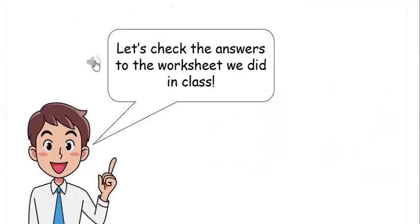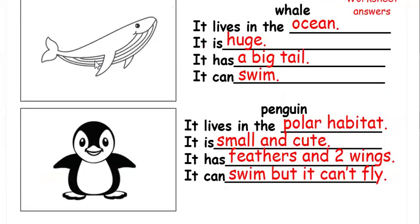Let's check the answers to the worksheet we did in class. It lives in the ocean. It is cold. It has a big tail. It can swim and dive. It lives in the polar habitat.